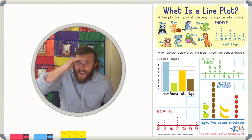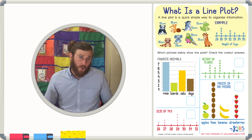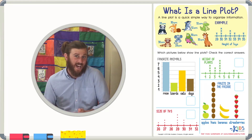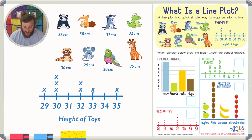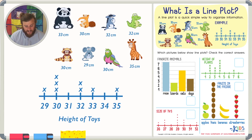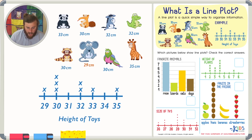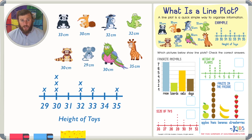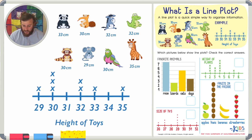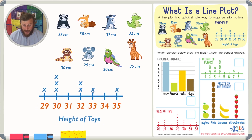Let's take a closer look at a line plot so we can easily identify what is a line plot and what's not. In our example we have some animals and the heights of each animal. The panda is 33 centimeters and other animals are 30, 29, and another that's 30. The line plot shows X's and numbers — all the heights of the animals are listed at the bottom, and each X represents one animal.